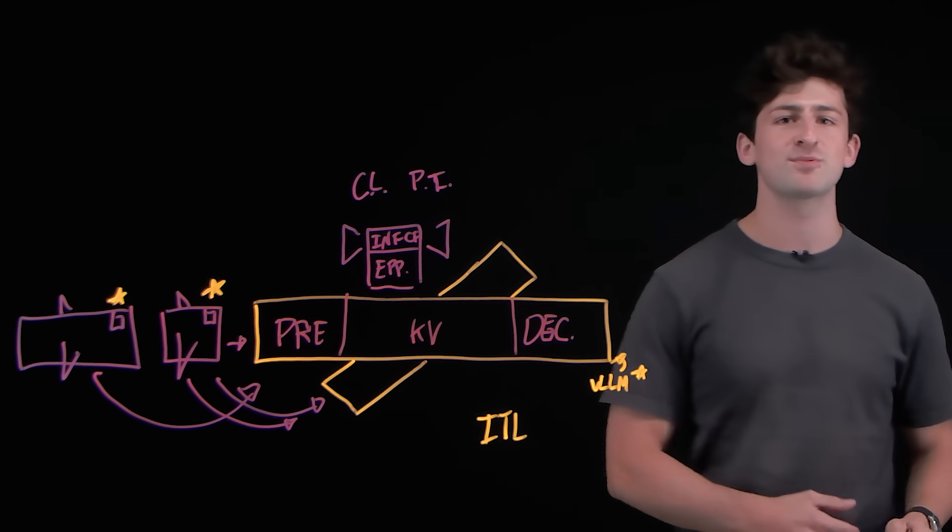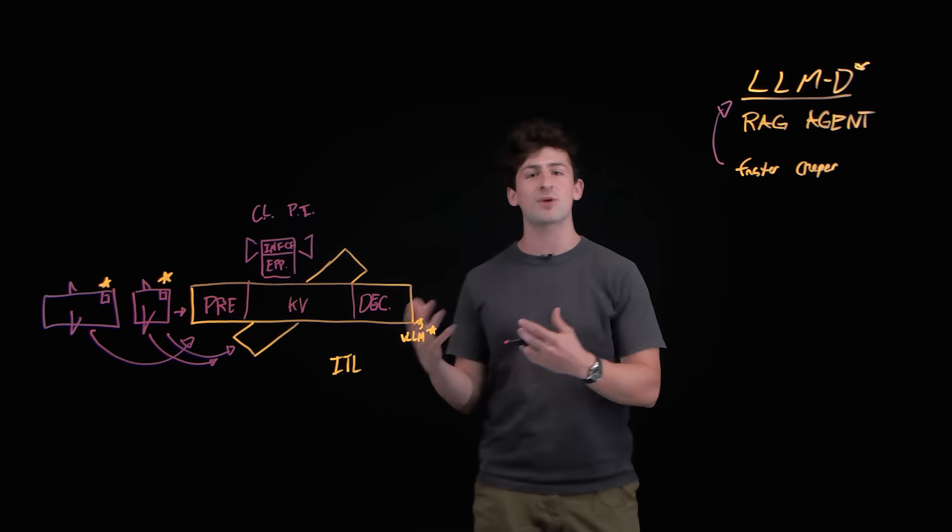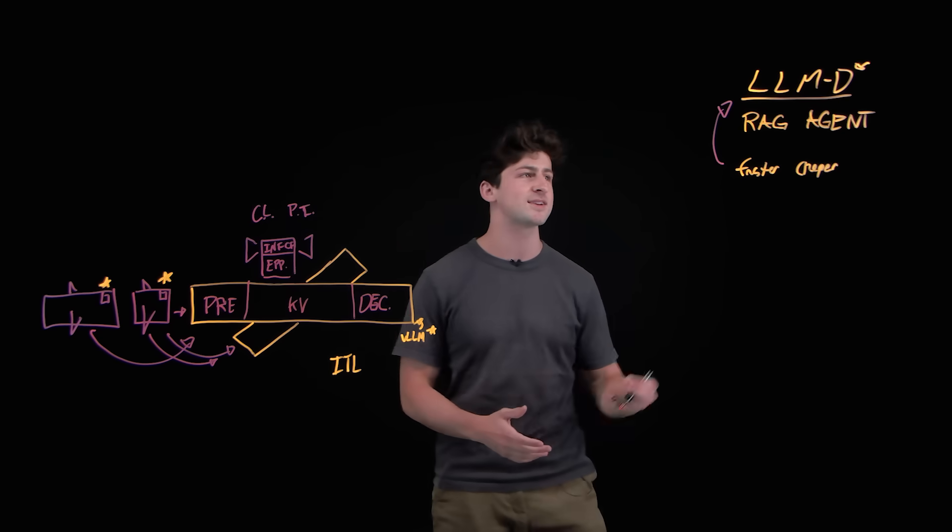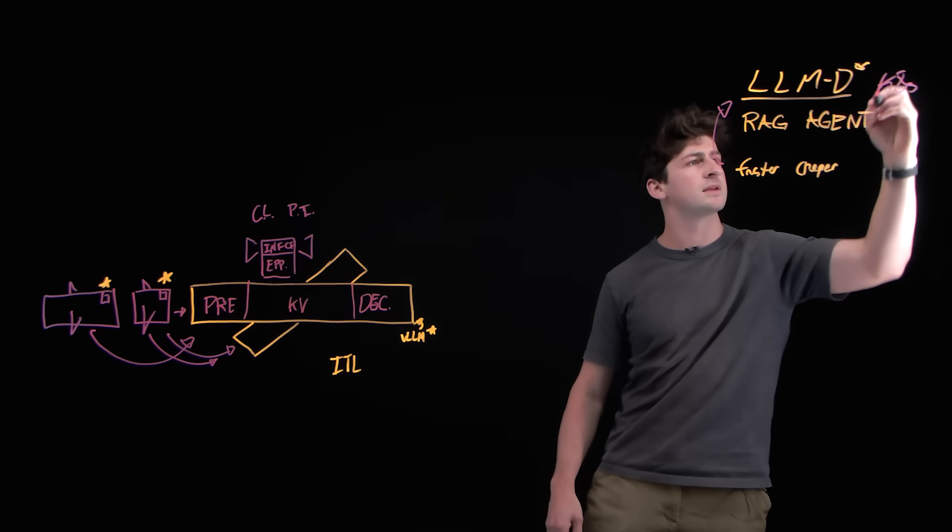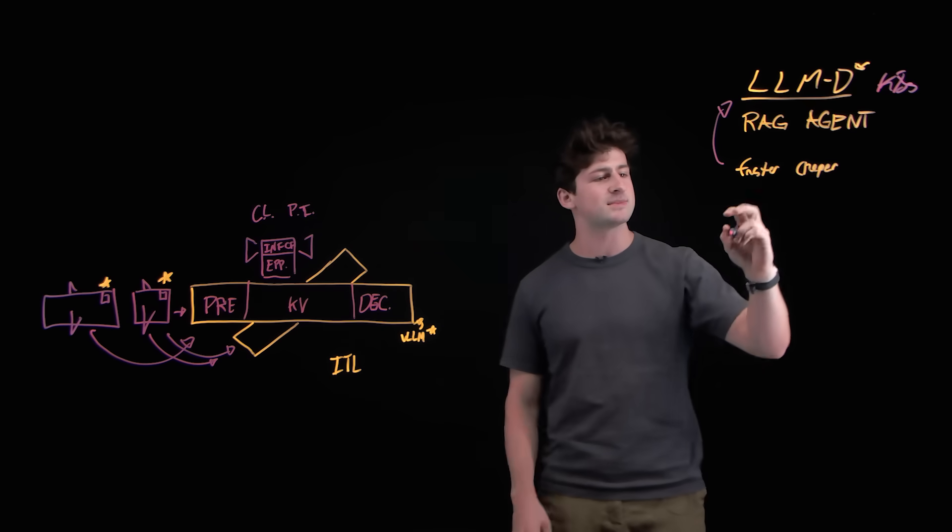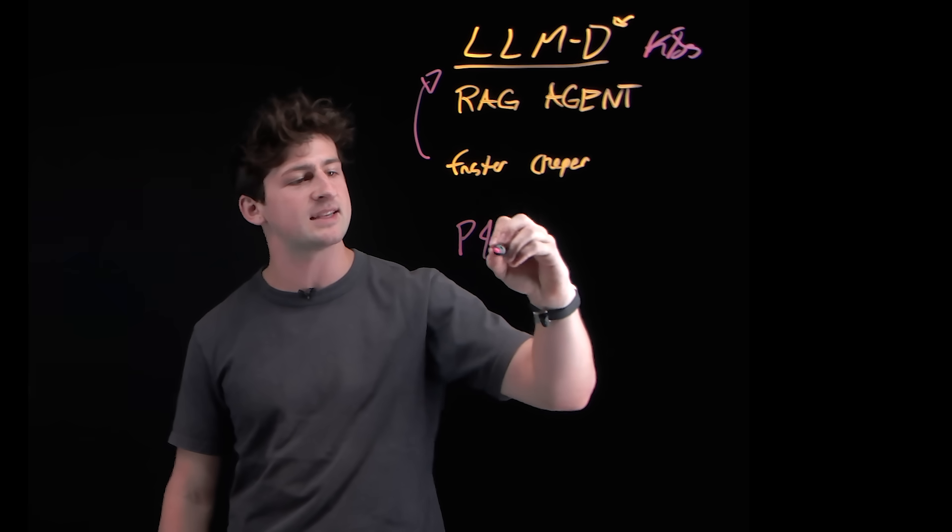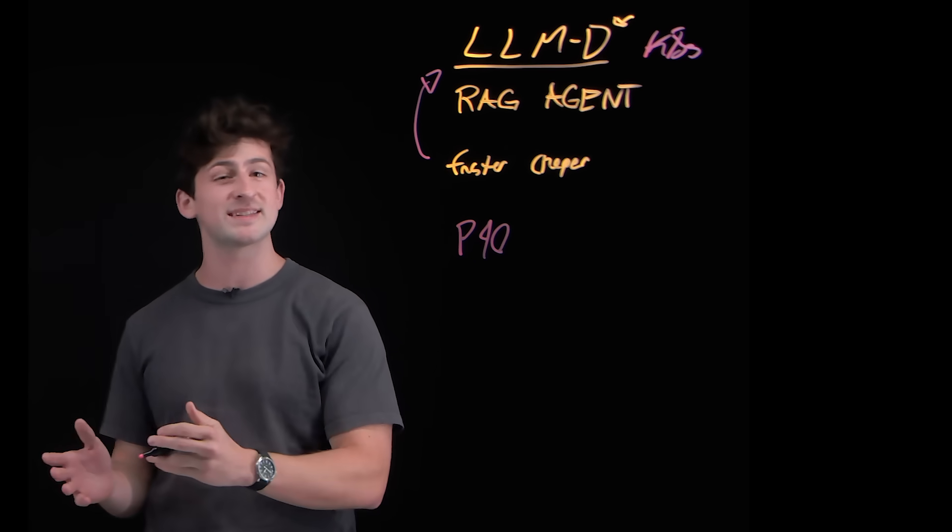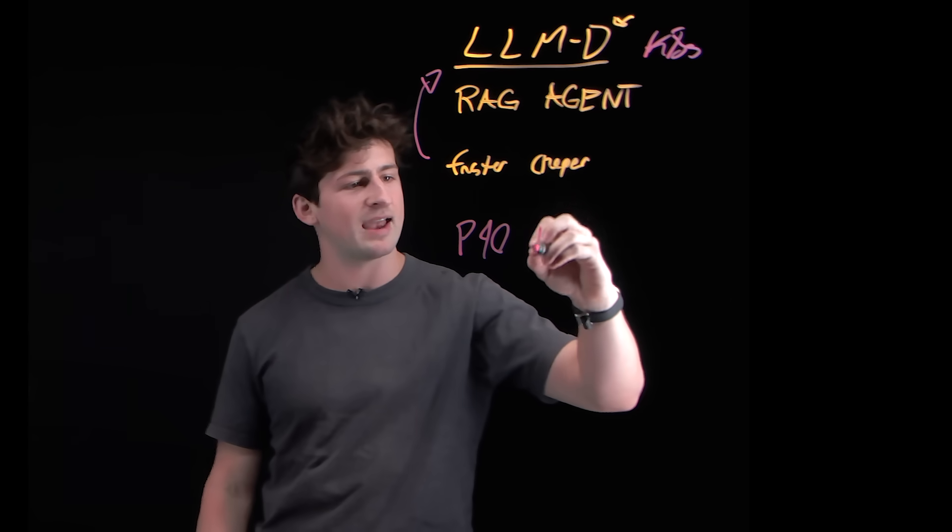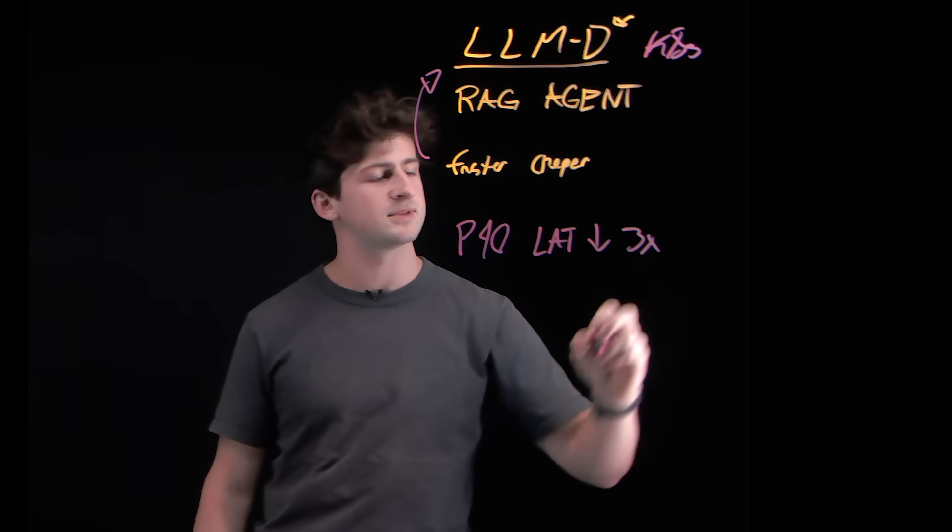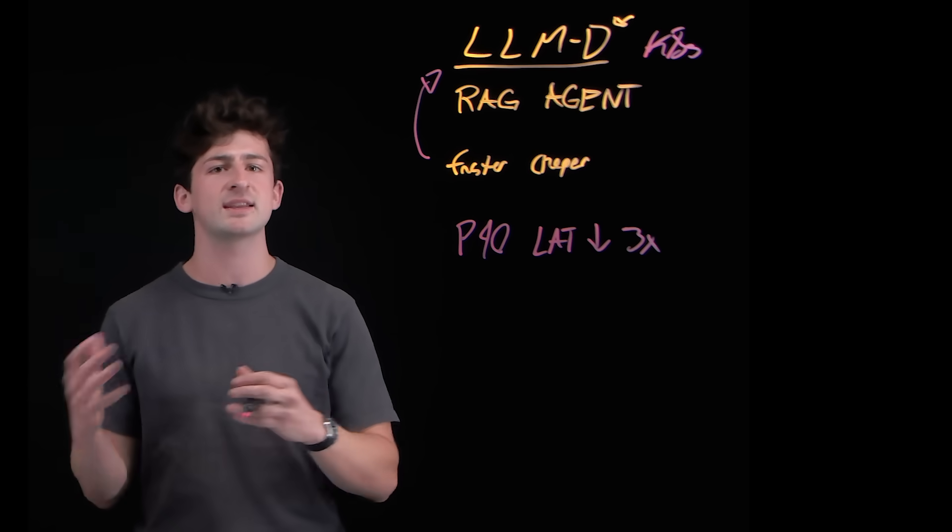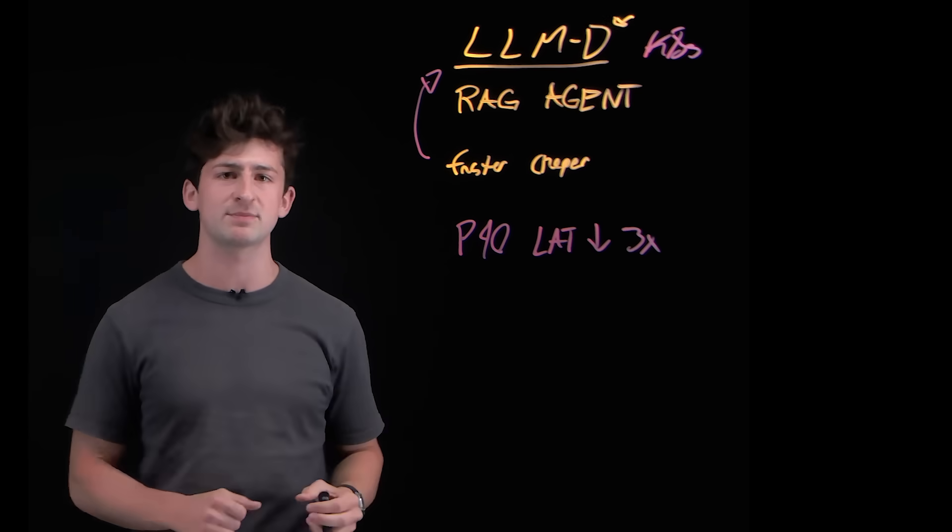And both of these features really help LLMD efficiently route and distribute inference on a platform such as Kubernetes. Now, for example, implementing LLMD improved P90 latency, or the bottom slowest 10% of request, at an improvement of three times. So, three times the time in order to get that lowest or slowest response back.